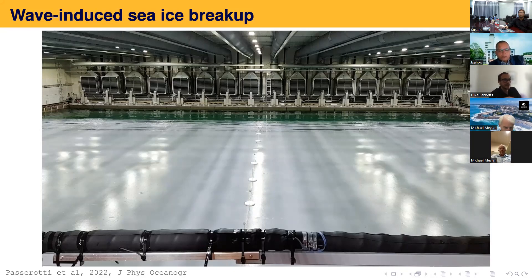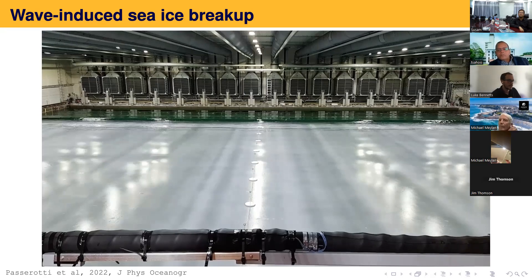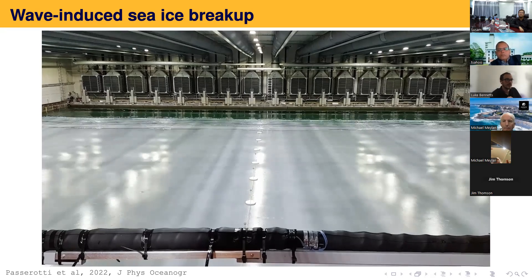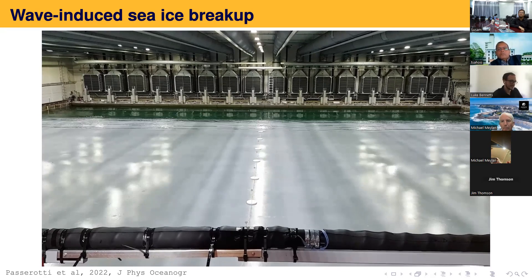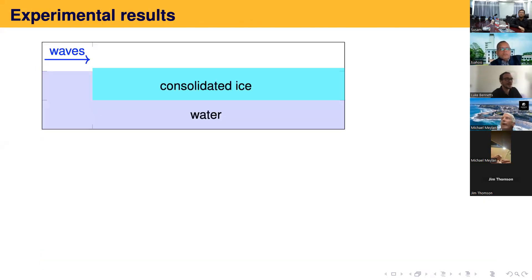I'm going to show you a video of the intermediate test — this is the partial breakup test. What you should have seen was the waves propagating through the ice cover, bending and flexing the ice cover and leaving some broken floes behind at the breaking front.